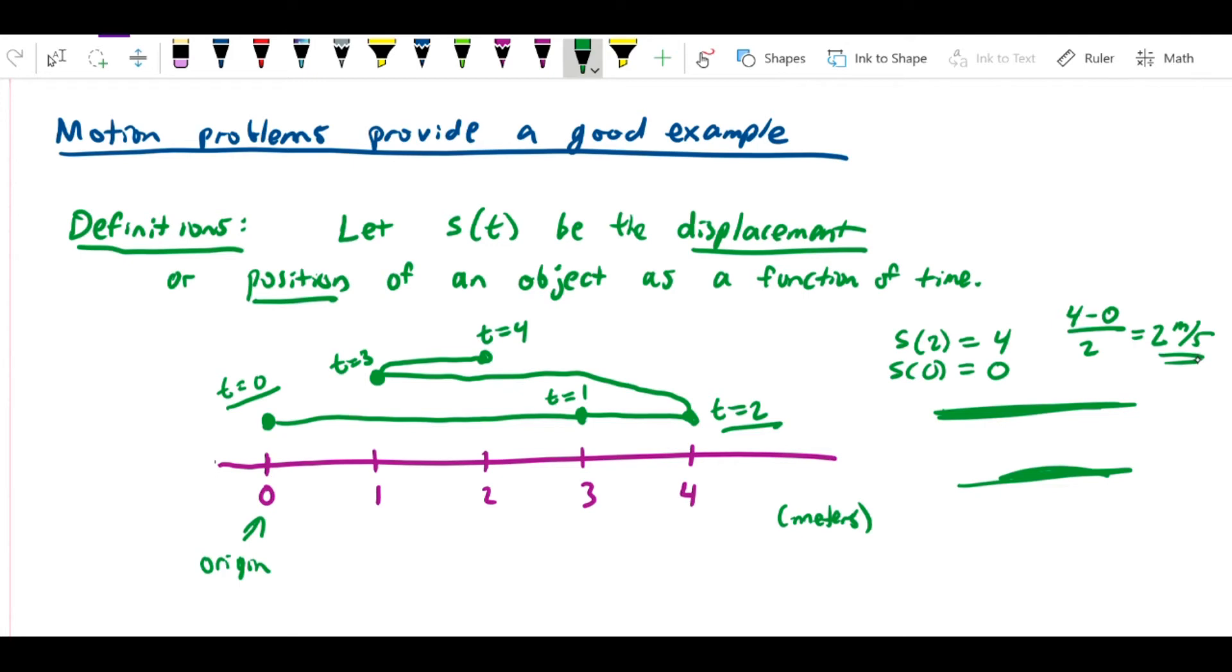Now suppose I want to know what its average speed is between time zero and time h, where h is just some really tiny number like 0.0001 seconds. I could do the same thing: what is its position at s(h), what is its position at s(0), and divide that by h minus 0.